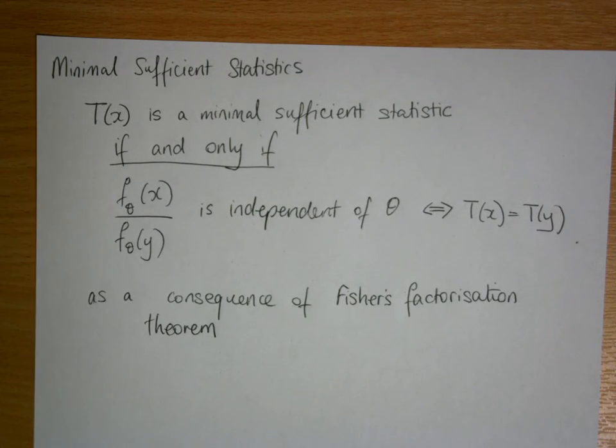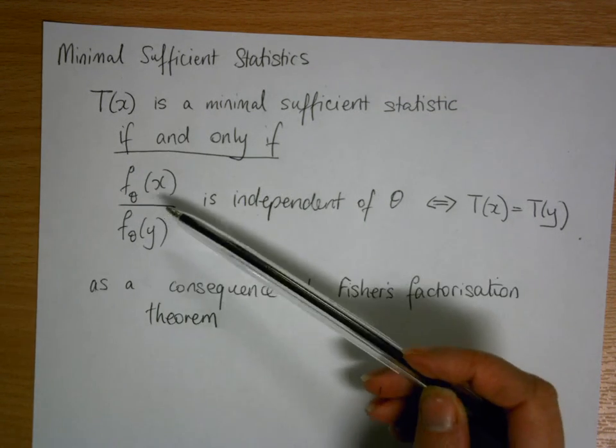We're going to look at finding the minimal sufficient statistic for Poisson data. We start by recalling the results of Fisher's factorisation theorem, and we're going to look at the ratio of a Poisson distribution in terms of x and in terms of y.